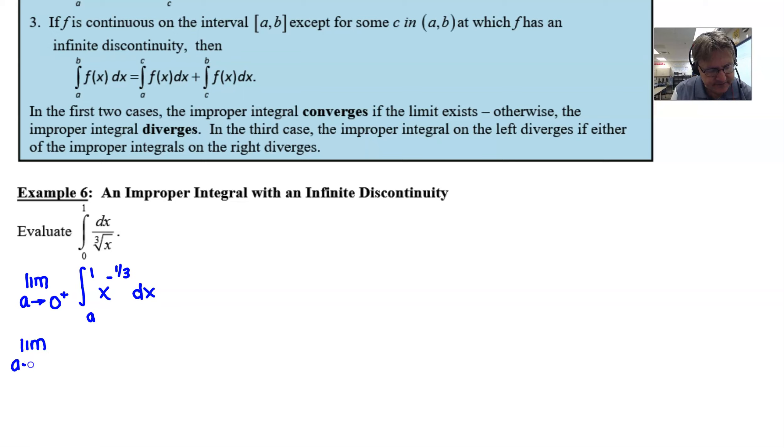So we still have A approaching zero from the right. When we integrate x to the negative one third, we would get x to the positive two thirds over two thirds or multiplied by three halves, if that looks better. And we would still be integrating from our A up to our one.